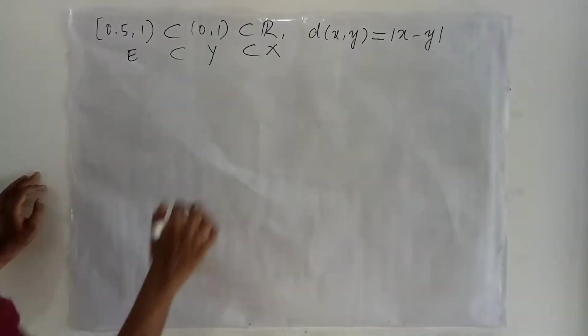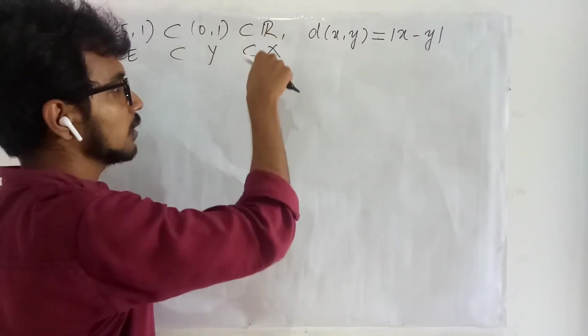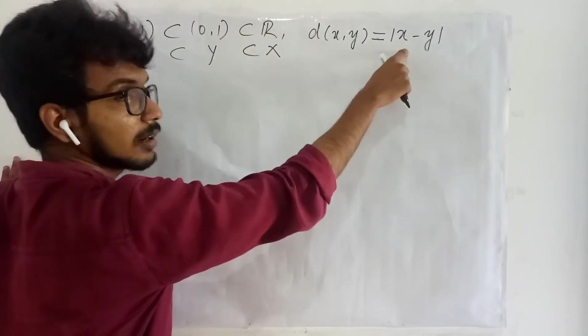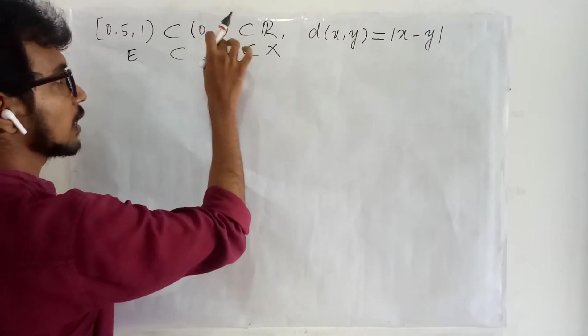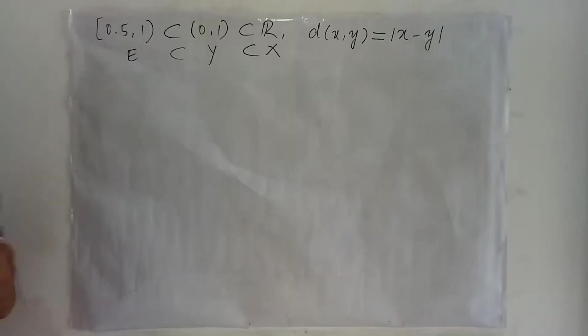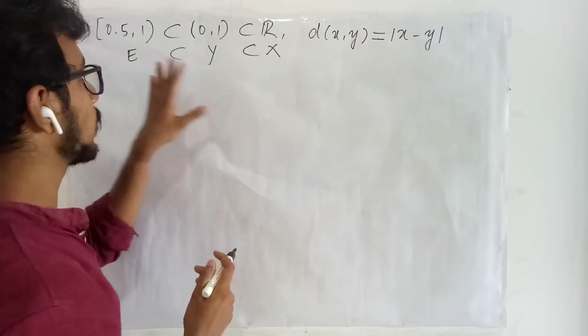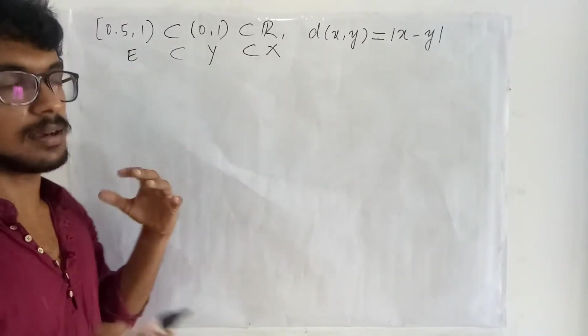Here our real line is considered to be the metric space X with this standard Euclidean metric, and this is the submetric space taken in this, and this is the set that we have considered. We are going to check whether this is open in Y and open in X or R.